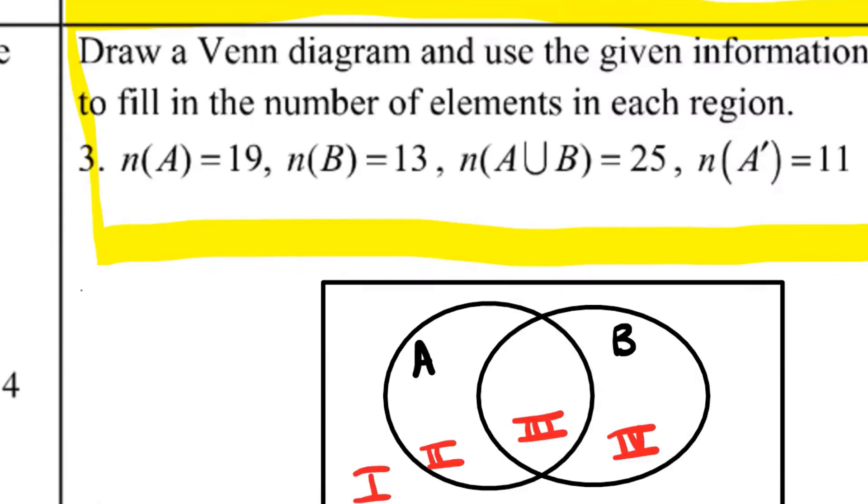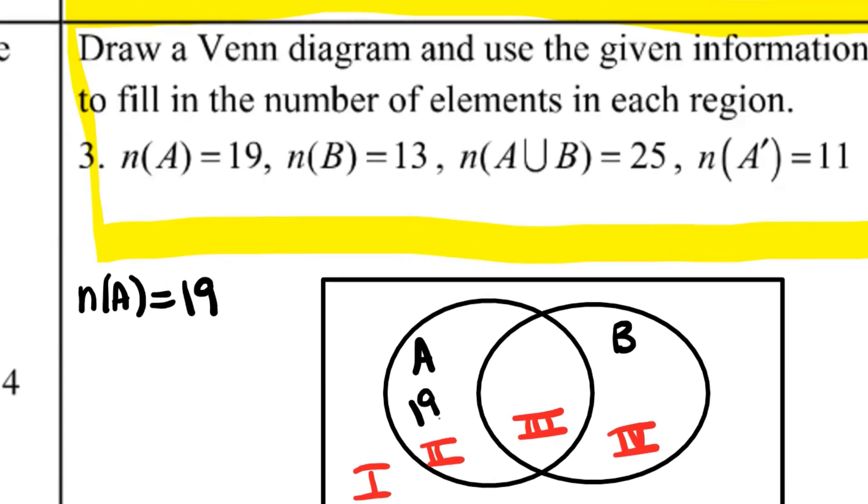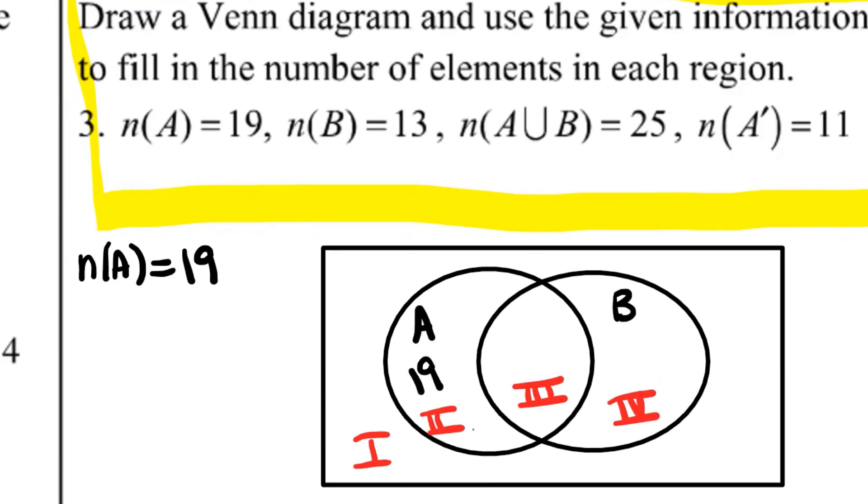Here's the first error to avoid. A lot of times people think, oh, the number of elements in A is 19, so I'm going to write a 19 here. What's wrong with that?